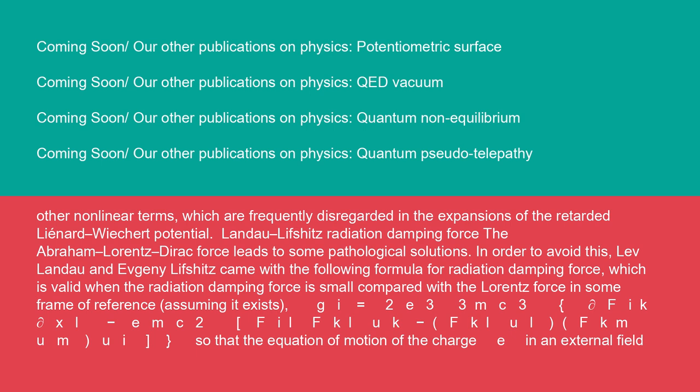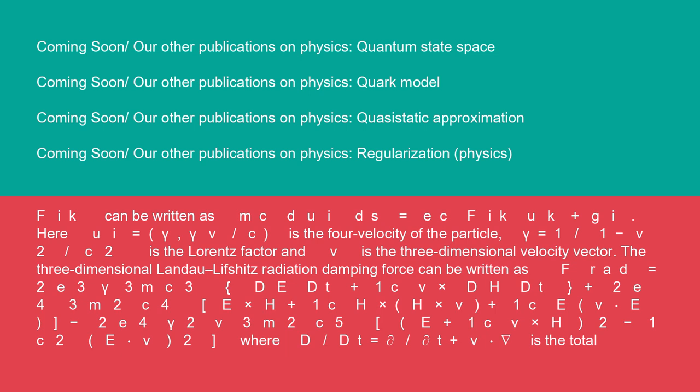G^i = (2e²)/(3mc³)[(∂F^ik/∂x^l)(e/mc²)F^il F^k_l u^k - F^kl u^l F^km u^m u^i]. So that the equation of motion of the charge e in an external field F^ik can be written as mc(du^i/ds) = ecF^ik u^k + G^i. Here u^i = (γ, γv/c) is the four-velocity of the particle. γ = 1/√(1-v²/c²) is the Lorentz factor, and v is the three-dimensional velocity vector.